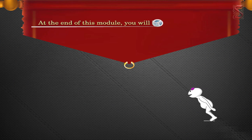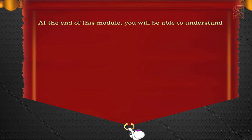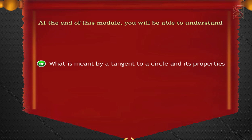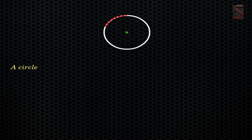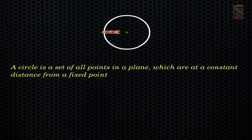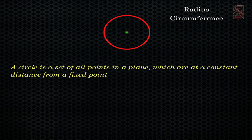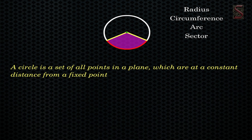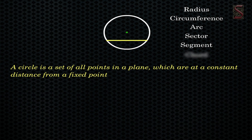At the end of this module you will be able to understand what is meant by a tangent to a circle and its properties. You have learned in your earlier class that the circle is a set of all points in a plane which are at a constant distance from a fixed point. This fixed point is called the center of the circle. You have also learned various terms like radius, circumference, arc, sector, segment, and chord of a circle.